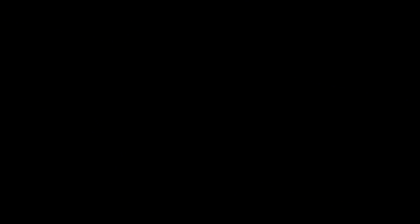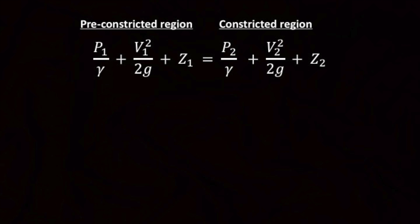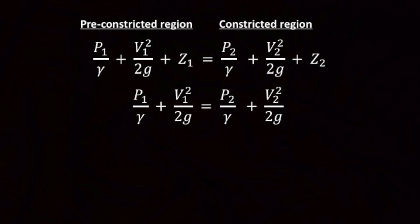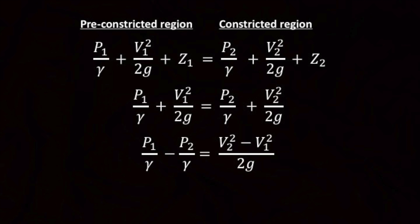Let's look at the Bernoulli equation. The Bernoulli equation is a simplified way to account for the energy of the fluid at two separate points. Let's place the first point before the constricted region and the second point at the constricted region. The first term on each side of the equation represents the energy due to pressure. The second term represents the kinetic energy of the fluid, and the last term represents its potential energy. If we assume a horizontal pipe, the potential energy term cancels out and we can establish a direct relationship between the pressure drop and the fluid velocity. An increase in the fluid velocity will have to be compensated by a pressure drop for energy to be conserved.